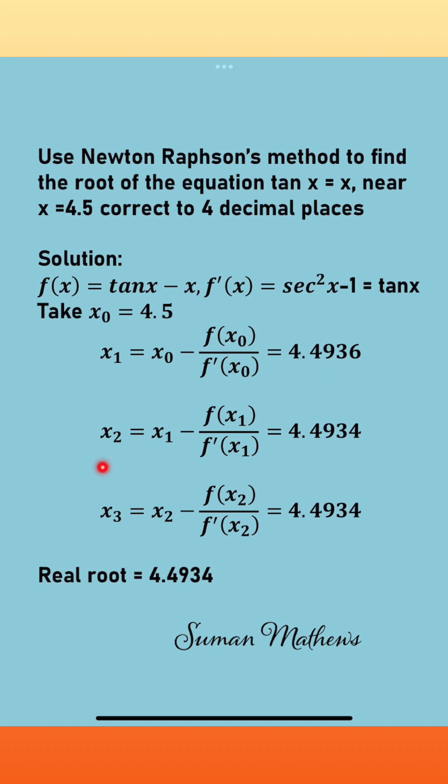Now for the second iteration, take x₁ as 4.4936 and x₂ equals x₁ minus f(x₁) by f'(x₁). So substituting, you get x₂ as 4.4934.